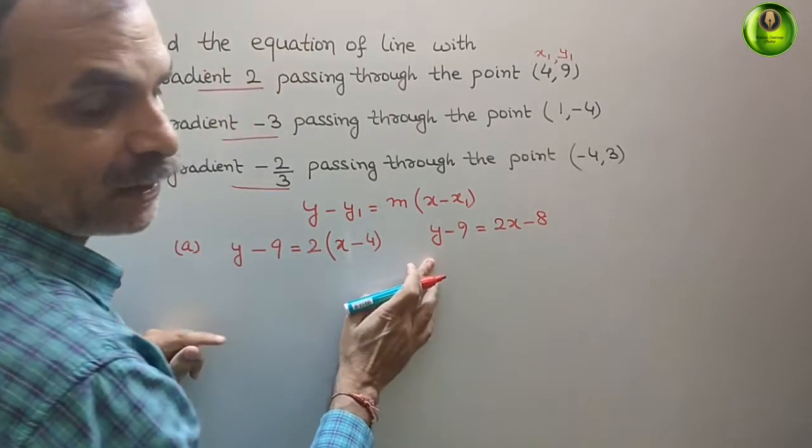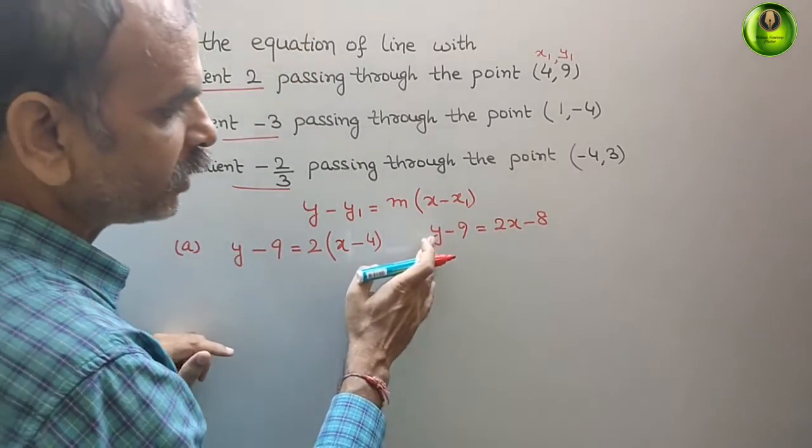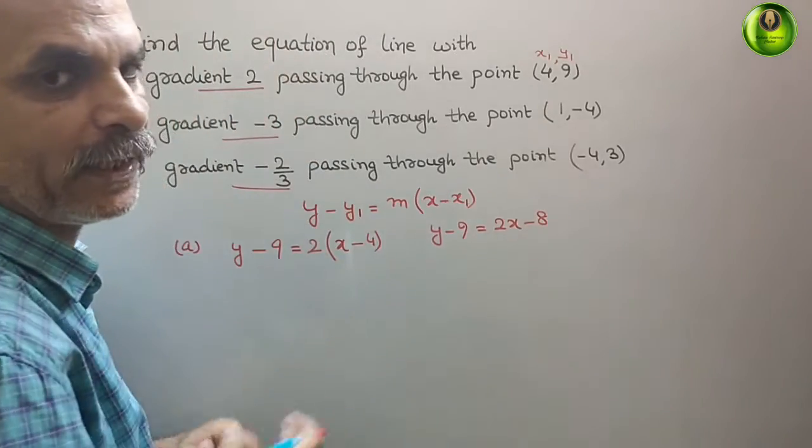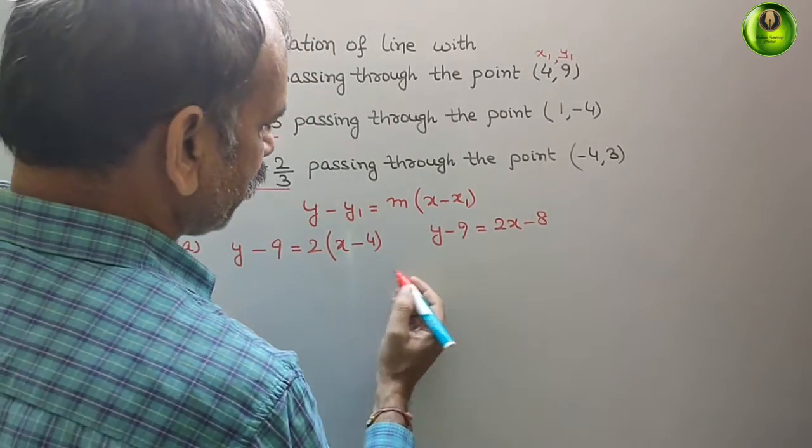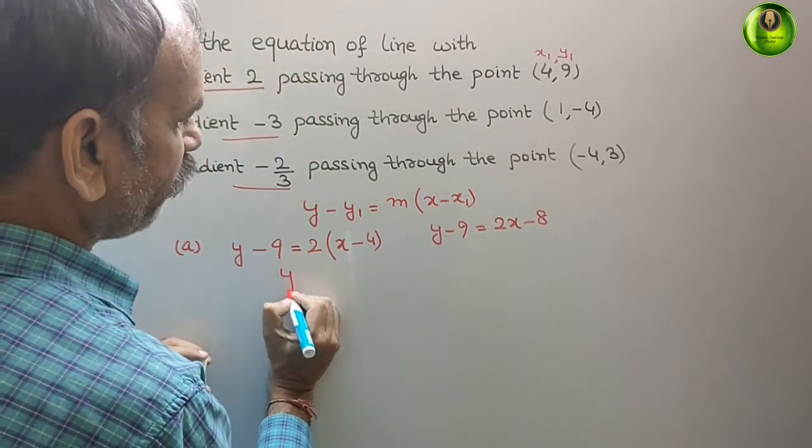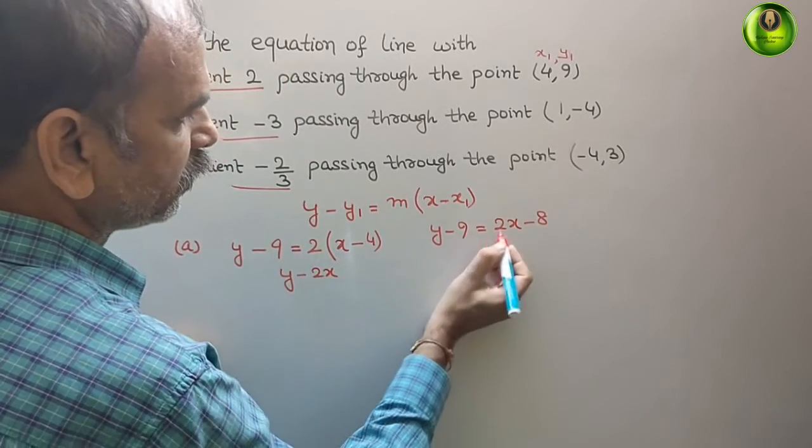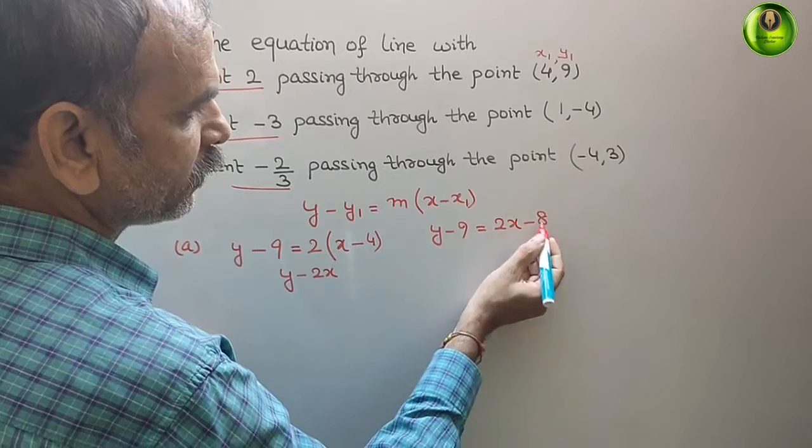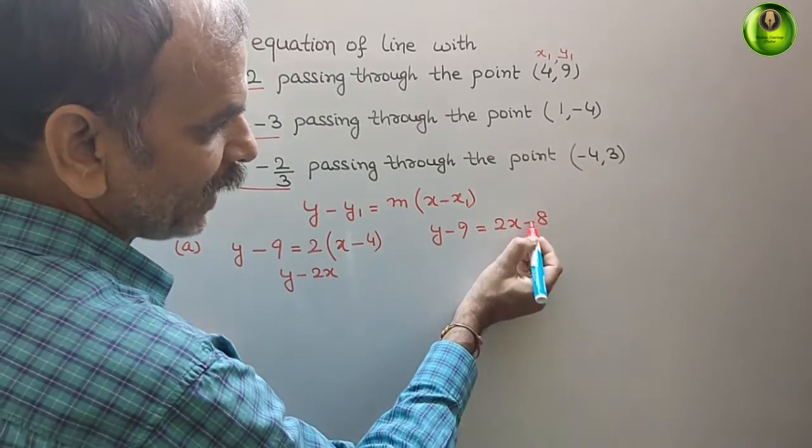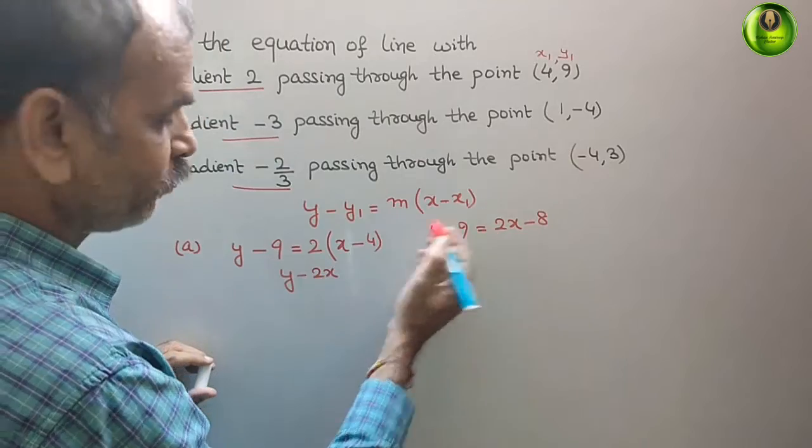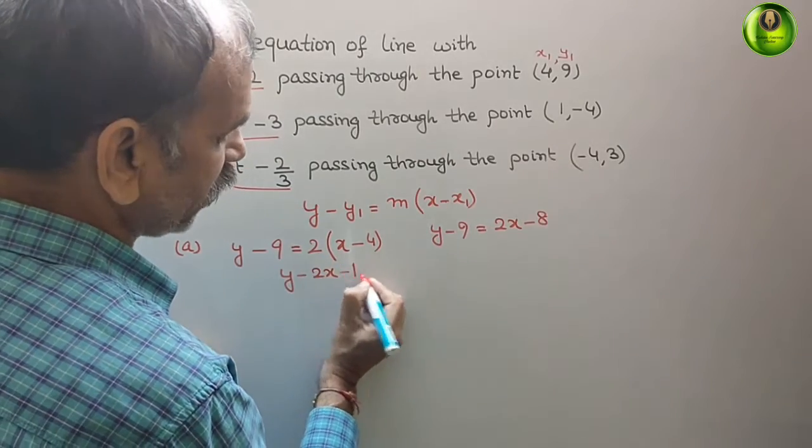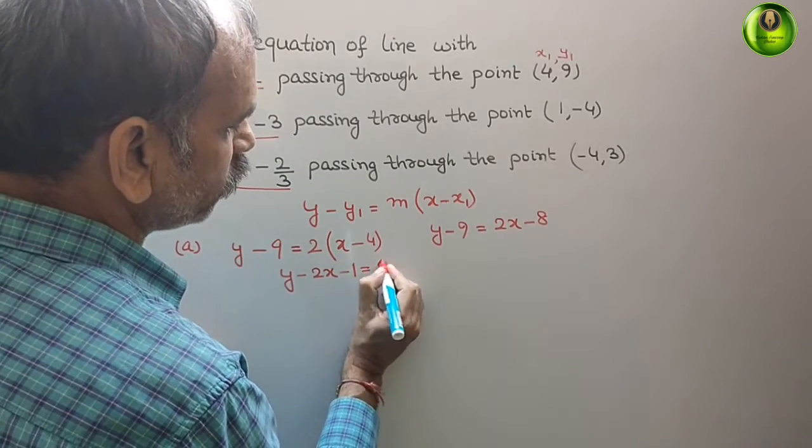Bring this to this side, or this to this side. Anything you can take. So here it will come as what? y minus 2x, then minus 1. No, no, minus 8 will come here as a plus. So it will be minus 1. That is equal to 0.